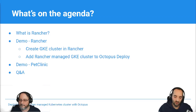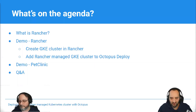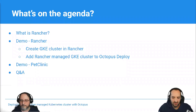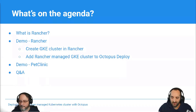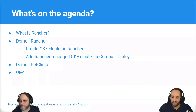Once we've talked a little bit about Rancher, I'll be handing the reins to Sean, where he'll demonstrate how you can create a Kubernetes cluster in GKE — that's the Google Kubernetes Engine in the Google Cloud — all managed through the Rancher web portal. He'll then walk you through adding the newly created GKE cluster into Octopus Deploy as a Kubernetes deployment target, and show us how to deploy a containerized version of the Java Pet Clinic application to the Rancher managed cluster.